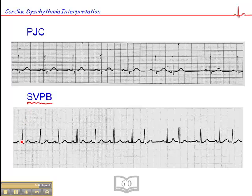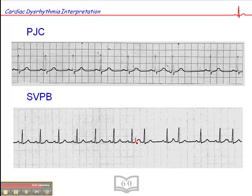Here we have sinus beats in sequence, and then this premature beat. It's difficult to see a P-wave preceding it, but if you look at the T-wave morphology specifically, you'll see there's a bit of a notch on it. That's probably a P-wave superimposed on the T-wave, because we don't see that notch in the preceding T-waves. So you could call it a PAC, but to be non-definitive, we'll call it a supraventricular premature beat, or SVPB. Here's another one as well where the P-wave is superimposed on the preceding T-wave.